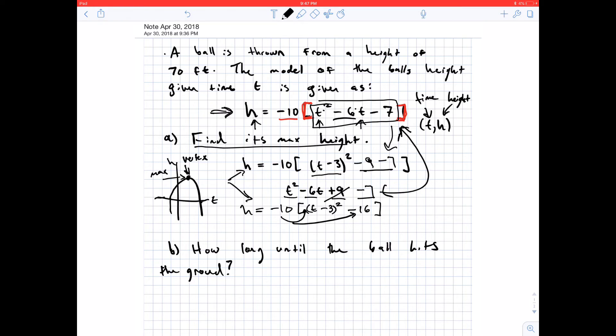And it'll also multiply to the negative 16. So we get negative 10 times t minus 3 squared. And then negative 10 times negative 16. Right? Because we foiled it in over here.